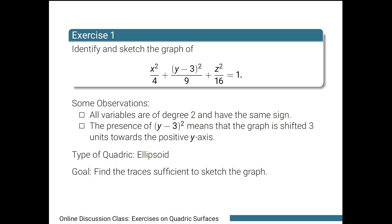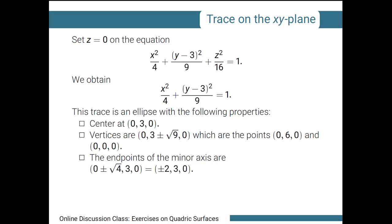Furthermore, since we are graphing an ellipsoid, we expect the traces to be ellipses. So we start with the trace on the xy-plane. We set z equals 0, so the third term on the left-hand side vanishes, leaving us with x squared over 4 plus the quantity y minus 3 squared over 9 equals 1. This trace is an ellipse with center at the point where x equals 0, y equals 3, and z equals 0.